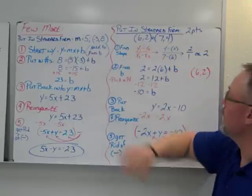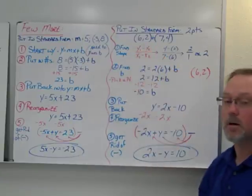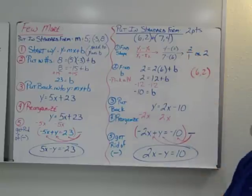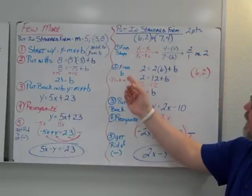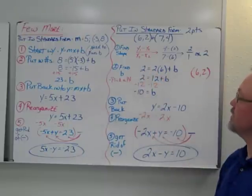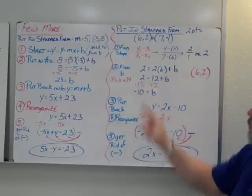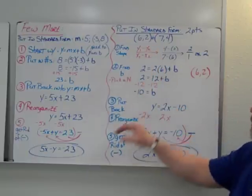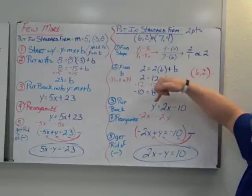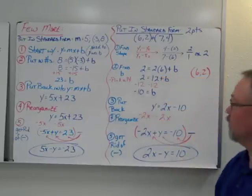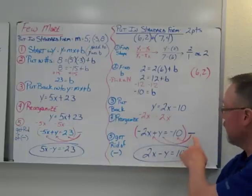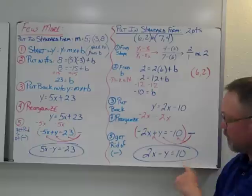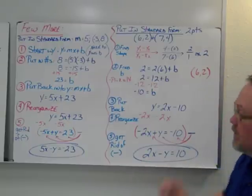If you're only given two points, you first need to find the slope using our slope formula. We put our numbers in and solve for slope, getting 2 over 1, so slope equals 2. Then we find b using y equals mx plus b with one of the ordered pairs, solving for b — moving the 12 over gives us negative 10. With slope and y-intercept in hand, we write y equals 2x minus 10, move the 2x over, but again we get a negative coefficient out front, so we multiply by negative 1, giving us 2x minus y equals 10 with a positive x coefficient.